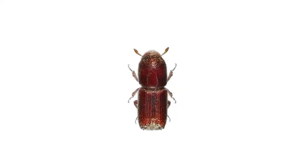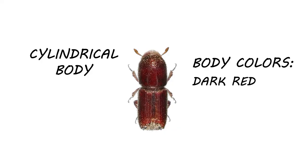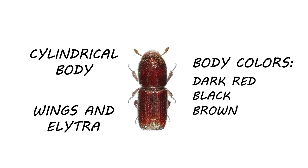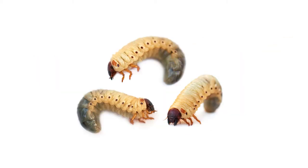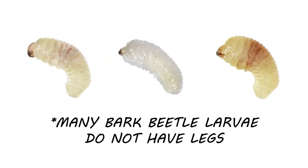Their bodies are cylindrical in shape, and their body colors are usually dark red, black, or brown. These beetles do have wings and are capable of flight. The wings are protected underneath the elytra when at rest. Bark beetle larvae are pasty white in color with brown heads. They resemble June bug larvae, or grubs; however, the legs are much less pronounced and in some species unnoticeable.